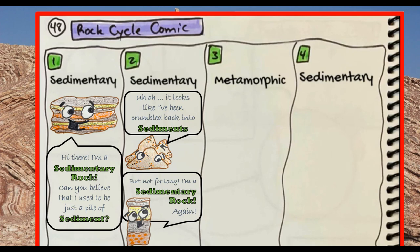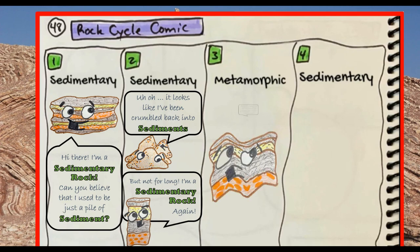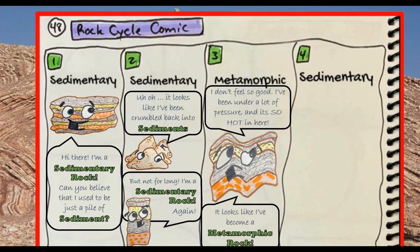Next, my rock has got to turn into a metamorphic rock, which means we have to apply heat and pressure. Here is my poor sedimentary rock under so much pressure and heat that he's become metamorphic. Notice how my metamorphic rock has the same basic pattern as my earlier sedimentary rock — that's on purpose.